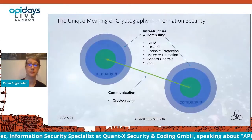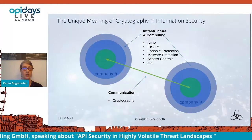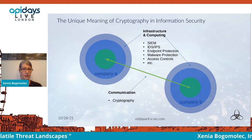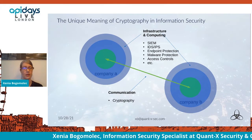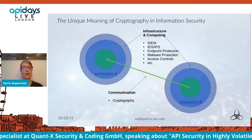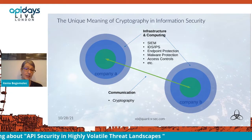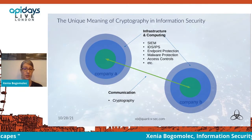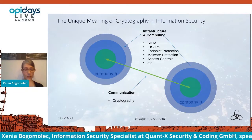Why is cryptography so unique in information security? If you look at a connection between two companies, networks have various protections: security event monitoring, intrusion detection systems, intrusion protection systems, endpoint protection, malware protection, access controls, and so on. But the moment data leaves the company and is in transfer, we have only one single protection, and that is cryptography. That's why it deserves a very special focus.